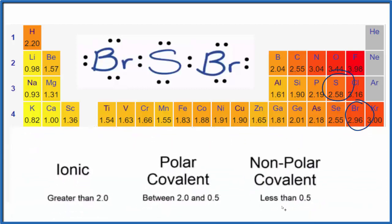We say if we have a difference of less than 0.5, we'll have a nonpolar compound, and this is less than 0.5, so we would say that this is nonpolar. But let's take a look at the molecular geometry for just a moment.